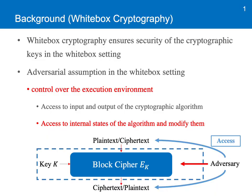Before I talk about the main point of our work, let me get started with some background. White box cryptography is cryptography which ensures security of the cryptographic keys in the white box setting. In this setting, the adversary is assumed to have control over the execution environment. So the adversary is allowed to observe not only inputs and outputs of the cryptographic algorithm, but also its internal states. What's more, the adversary can even modify the internal states. This white box setting is quite different from the standard model called the black box setting, where the adversary is allowed to observe only inputs and outputs of the algorithm.